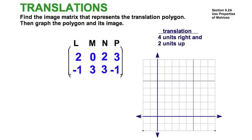And in consistency with the book, we're going to go with blue for the preimage and we'll translate red for image. So let's look at this first. Each of these values, the first row will be the x or the abscissa. The second row, y or the ordinate. And in each case, L will be the point (2,-1), M (0,3) on the y axis, N (2,3), and P (3,-1).